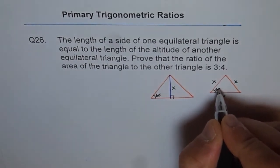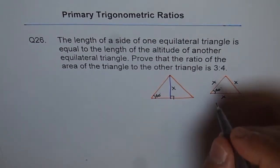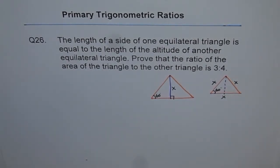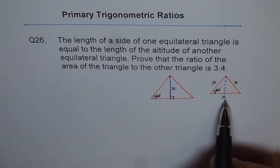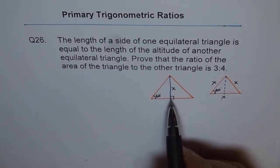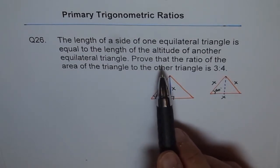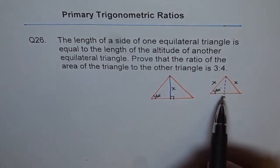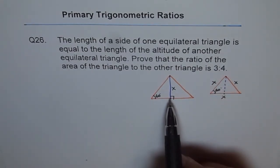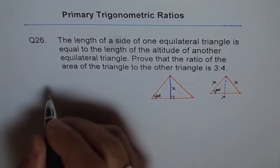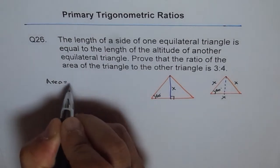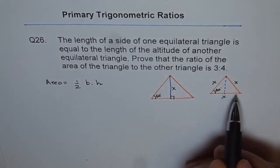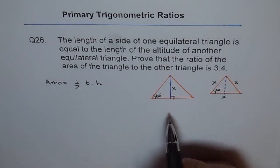All sides are equal. Now let's drop a perpendicular here — now we have two triangles. Side length is x in the first one, and altitude is x in the other. We need to prove that the ratio of area of one triangle to the other is 3 is to 4. Area equals half base times height. We are given base for one triangle and height for the other, so we need to find the other things.